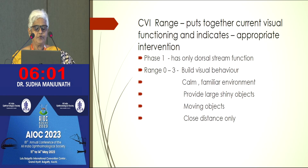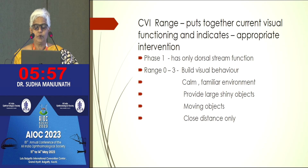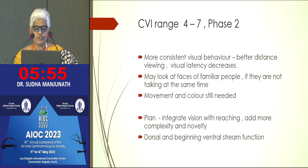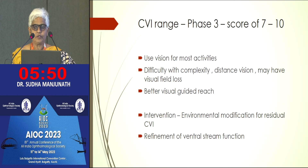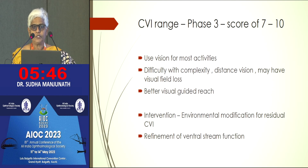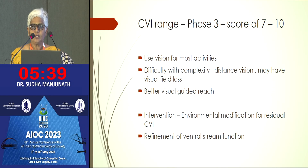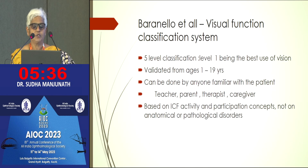Dr. Roman-Lansi defined three phases of CVI. Phase one involves only dorsal stream function. Phase two sees the beginning of ventral stream function. In phase three, ventral stream function is also getting refined. With each phase, there are specified therapeutic modalities and interventions that could be used. This is an extremely handy way of looking at CVI, especially for low-functioning CVI.